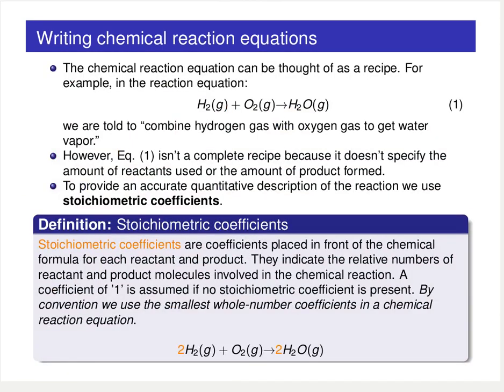We can think of these chemical reaction equations as a recipe. It's basically a recipe telling us to combine hydrogen with oxygen and get water vapor. However, equation one here isn't the complete recipe because it's not specifying the amount correctly of each reactant or product. To provide accurate quantitative description of the reaction, we need to introduce stoichiometric coefficients.